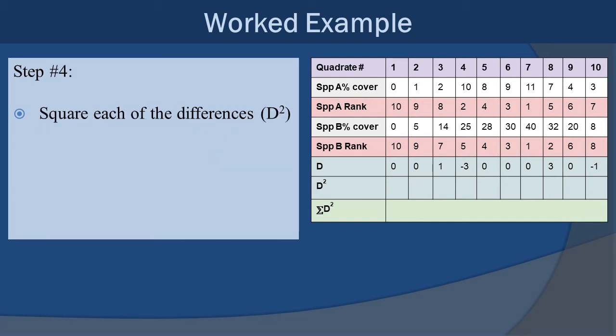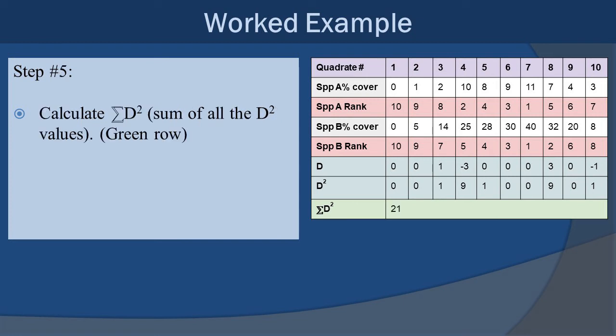Step 4, we simply take that D row that we've calculated by doing the differences and square it. This also happens to take care of our negative numbers too, so now everything's just a positive number or 0. Step 5, you calculate the sum of the differences of D, summing all of the D squares up. So you add 0 plus 0 plus 1 plus 9 plus 1 plus 0 plus 0 plus 9 plus 0 plus 1, and it adds up to a grand total of 21. So the sum of D squared is 21.